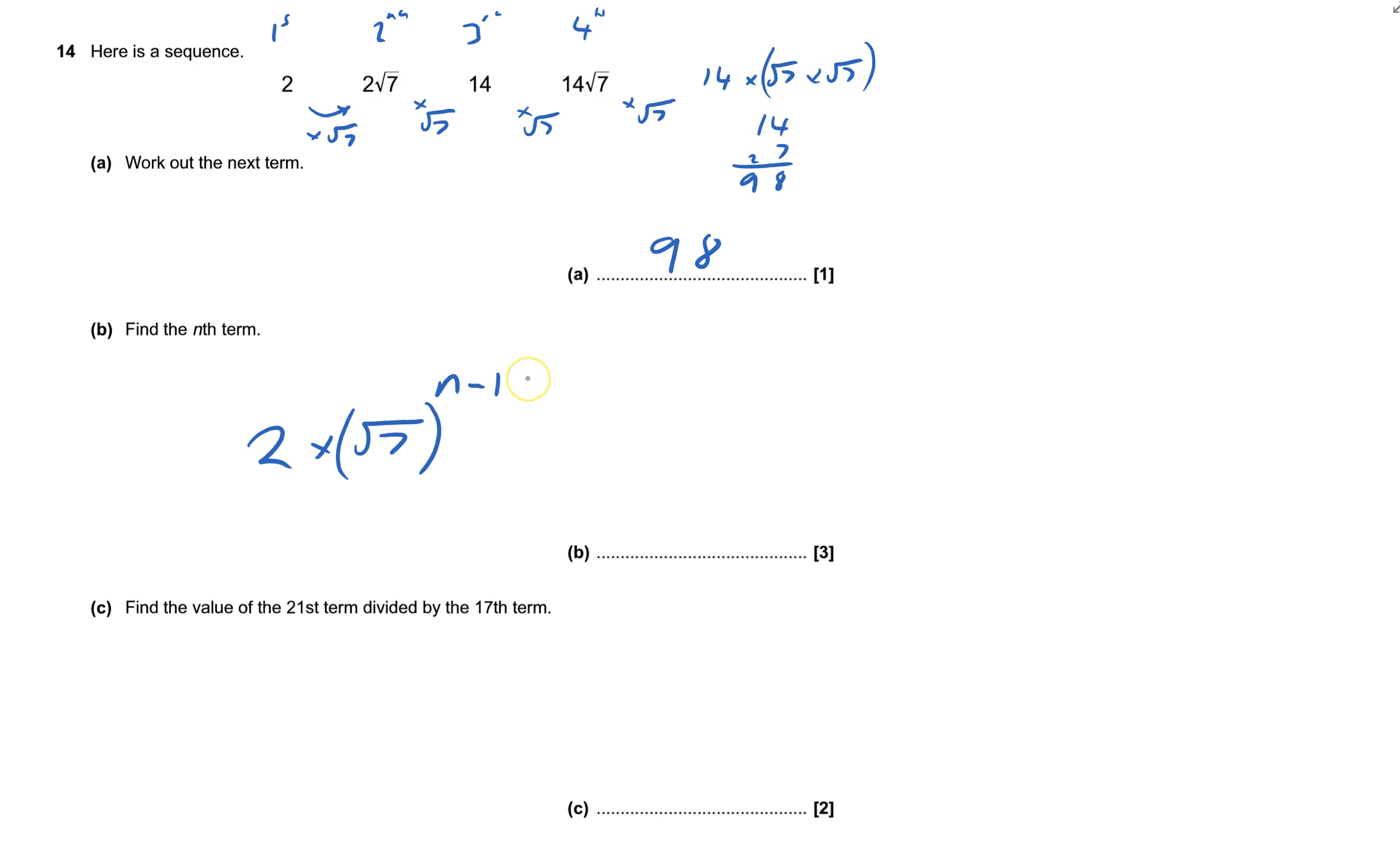So the nth term will be n minus one. Just check it works: third term when n is 3, I'll have to times it by three take away one, which is two, so I've got times by root 7 squared - times by root 7 and another time. That's correct.